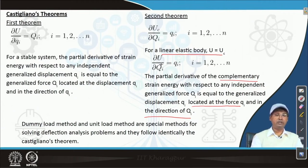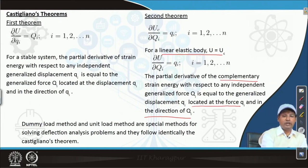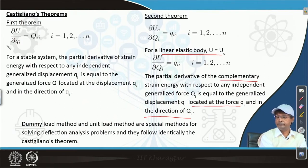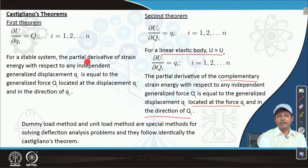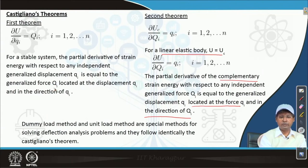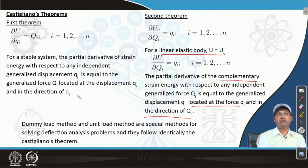Following that, we can also prove this in a different way, which is beyond the current scope — we may refer to advanced books for that. The first theorem states: del U / del qi equals the generalized force Qi. For a stable system, the partial derivative of strain energy with respect to any independent generalized displacement qi is equal to the generalized force Qi located at the displacement qi and in the direction of qi. This is just the opposite of the second theorem, making the first theorem easy to remember.